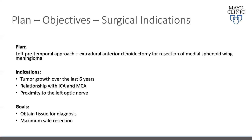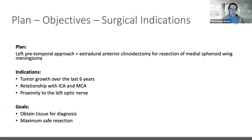The indication for surgery was tumor growth over the last six years — the tumor was very minor or not identifiable in the 2014 images — and the relationship with the vessels and the left optic nerve. The plan was a left pre-temporal approach with an extra-dural anterior clinoidectomy for resection of the tumor. The main goal was obtaining tissue for diagnosis and achieving maximum safe resection, while the primary objective was protecting the vessels and the left optic nerve.